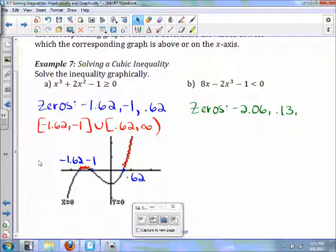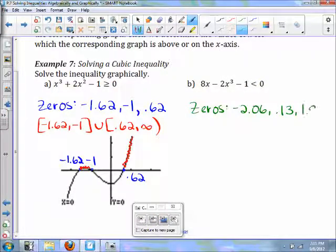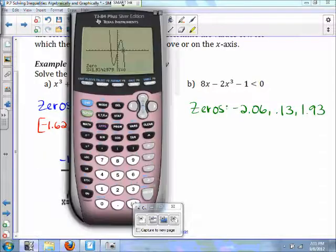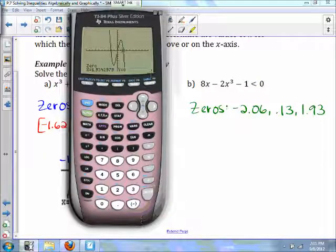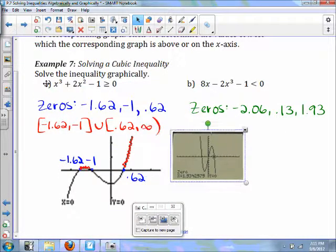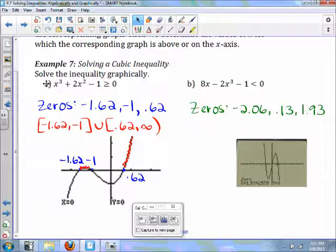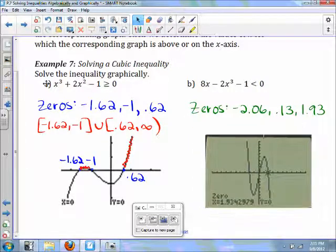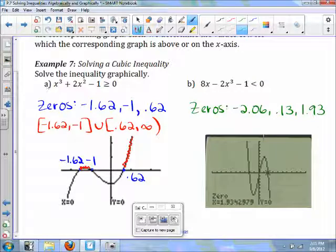And my third zero is at 1.93. Put a 0 there. Here's the 0.13. Here's the negative 2.06. So where is this less than 0? Well, it's less than 0 here and there.